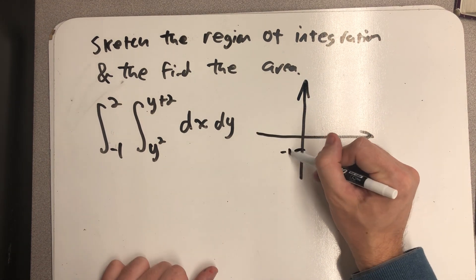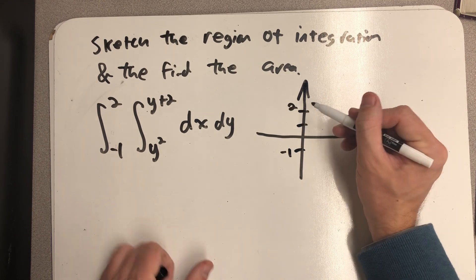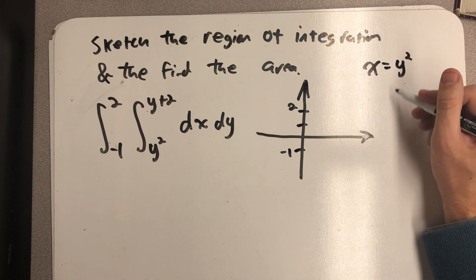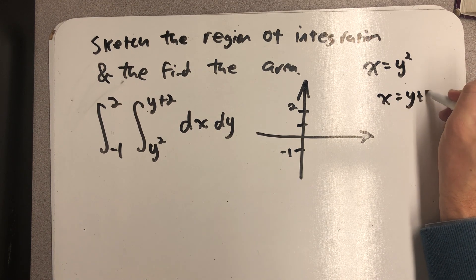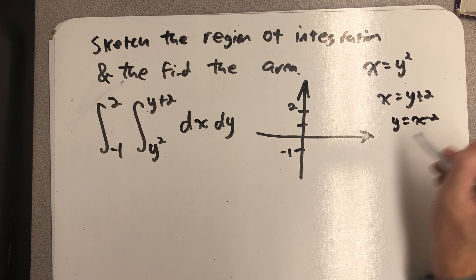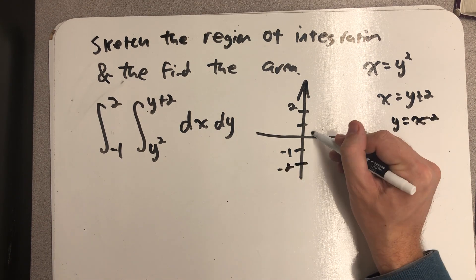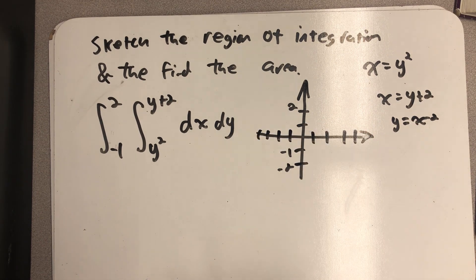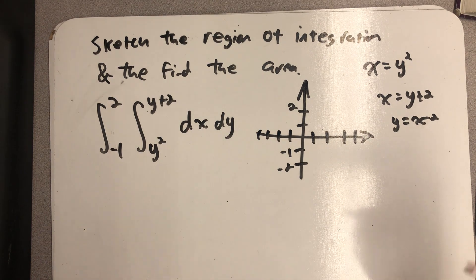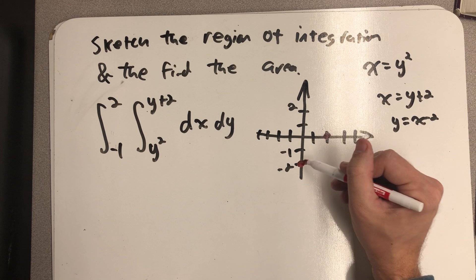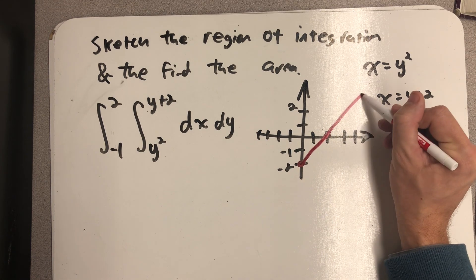In the y direction I'll need to go from minus 1 up to 2, and then in the x direction I'll need to graph x equals y squared and x equals y plus 2, which for purposes of graphing I'm going to think of as y equals x minus 2. I'll sketch x equals y plus 2 first using intercepts, since that's always an easy way to graph a line.